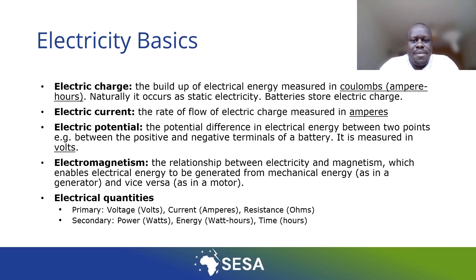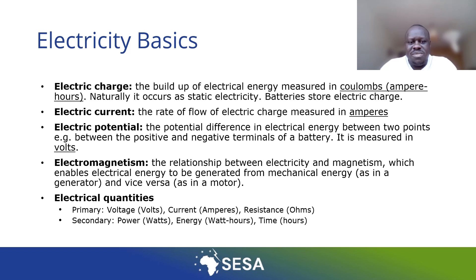Electricity is very much known with its electrical quantities, and the primary ones which you hear quite often are voltage, current, and resistance. For solar PV systems, because we also use some batteries, you need to know something called charge, measured in ampere hours. In electricity, you will see something related to electromagnetism, which is the relationship between electricity and magnetism itself. That enables electrical energy to be generated from mechanical means such as generators, and of course the reverse is also true from motors.